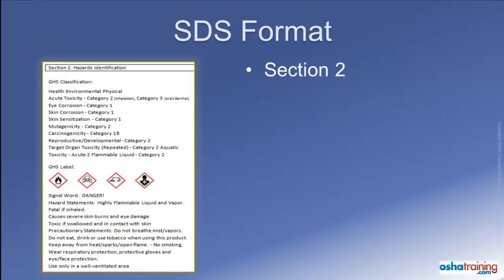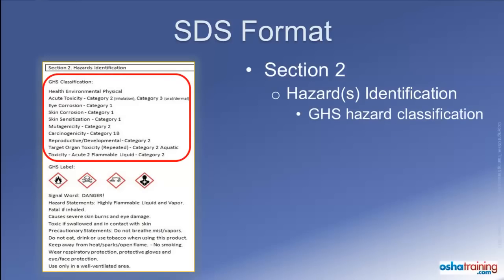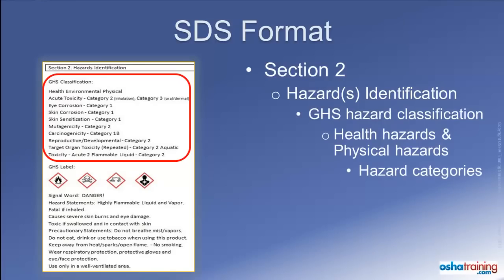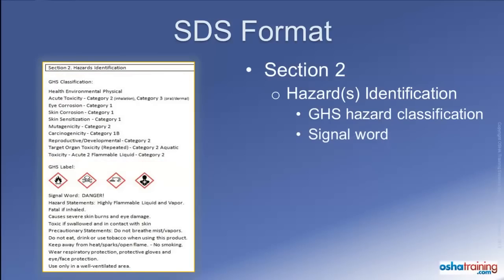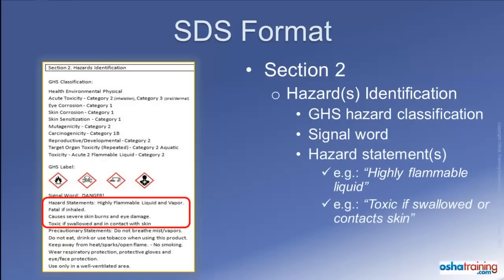The second section of a safety data sheet is titled Hazard Identification. Here you will find the GHS hazard classifications for the product, including those for each health hazard and physical hazard, and their individual ratings in applicable hazard categories. You will also find the appropriate signal word associated with the product. There are only two signal words used in the GHS system: either the word danger, which indicates a relatively severe or immediate hazard, or warning, which indicates a less severe but still potentially harmful level of hazard. This section will also display one or several hazard statements that give employees a quick warning about what hazards are associated with the product, and differ according to the classification and categories of hazards presented by the product.